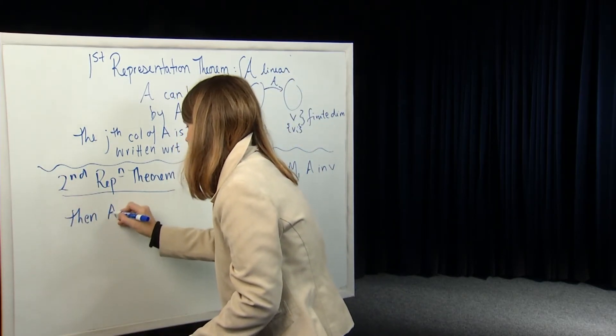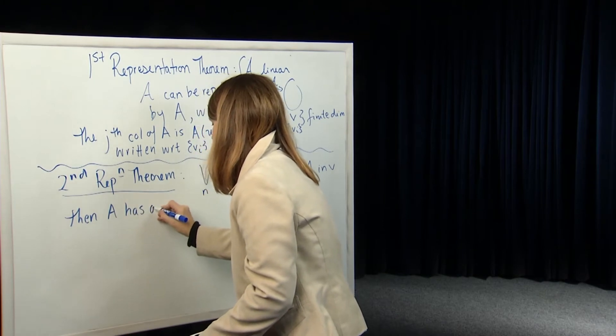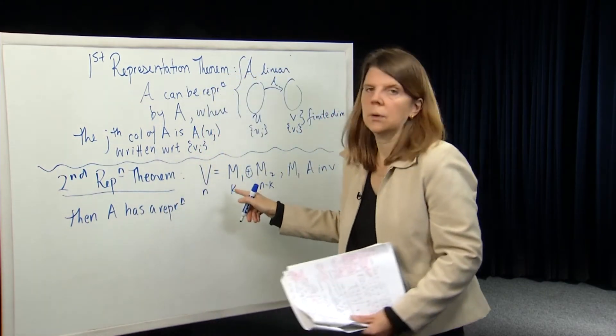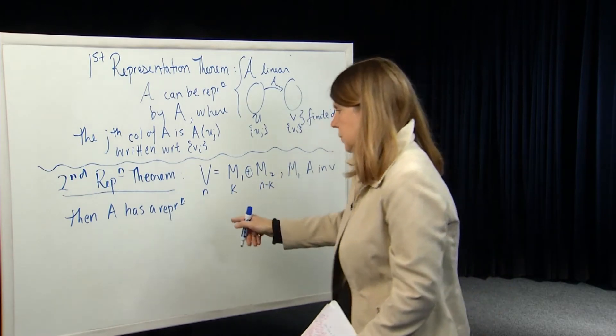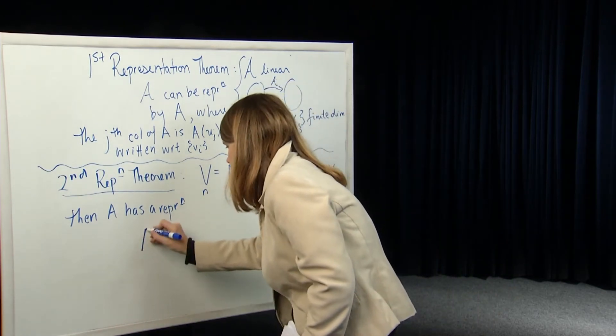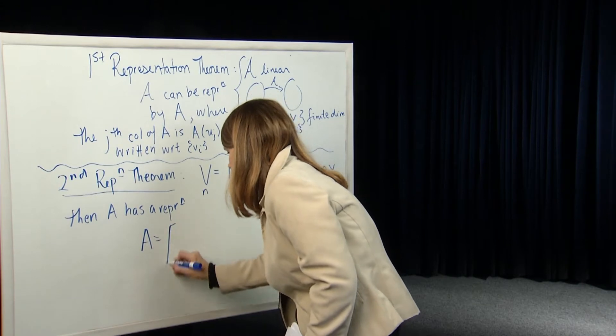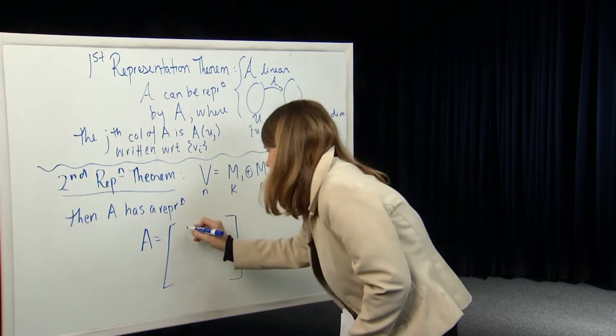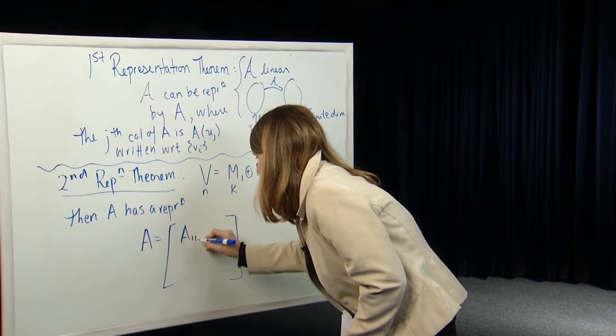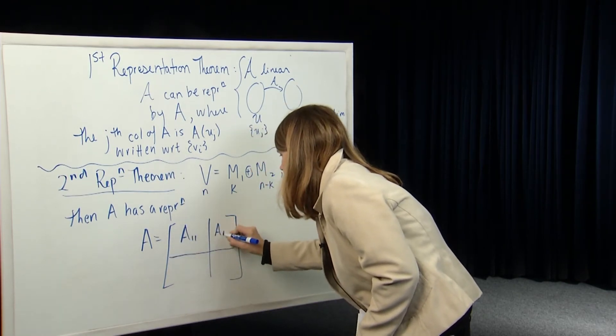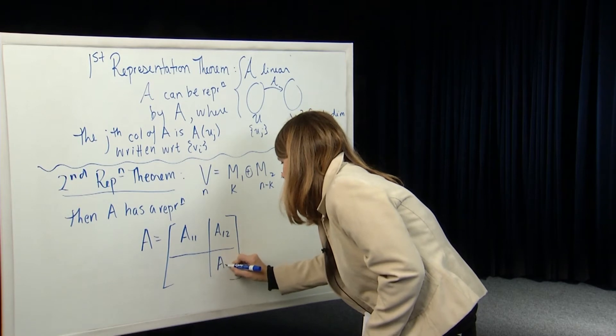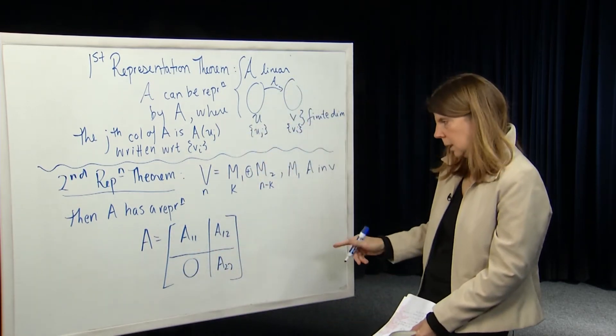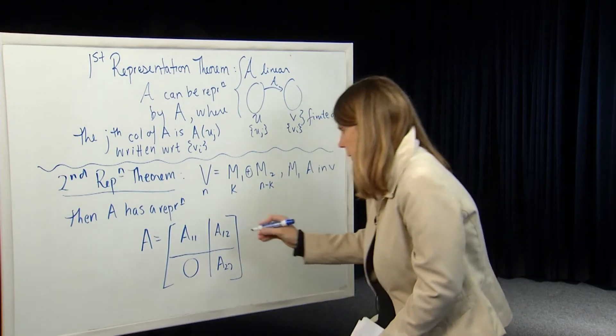Then the matrix A has a representation which is as follows. Then A has a representation, meaning a basis can be chosen for the space V such that A has a representation which looks like the following. So it's going to look at, I'm going to write it in terms of these block matrices. A11, A12, A22, and this matrix here is zero.